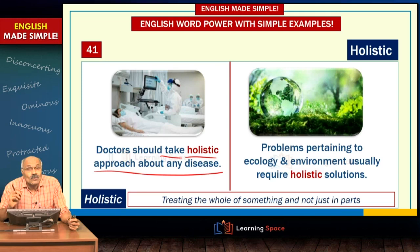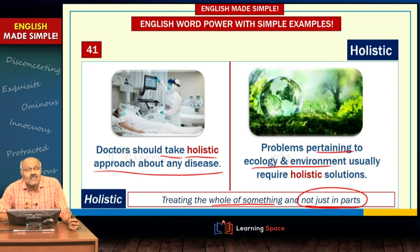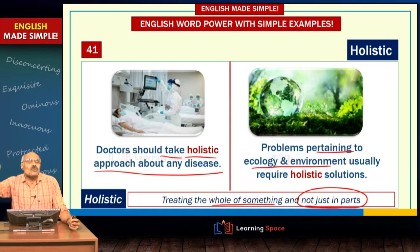That means treating the whole of something and not just parts. Problems pertaining to ecology and environment require holistic solutions, because ecology and environment are spoiled from different perspectives — somebody may release polluted air, polluted water, plastic pollution. If you tackle them in parts you don't get the desired outcomes, so holistic means you have to see the issue in totality.